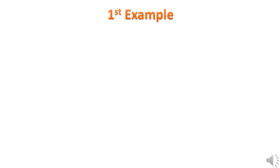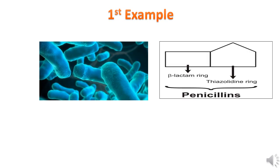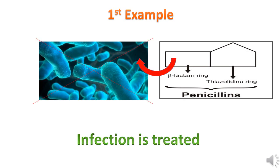Consider the first example. If there is bacteria and there is antibiotic penicillin, penicillin has a beta-lactam ring. This beta-lactam ring will kill the bacteria, and therefore the infection is treated.